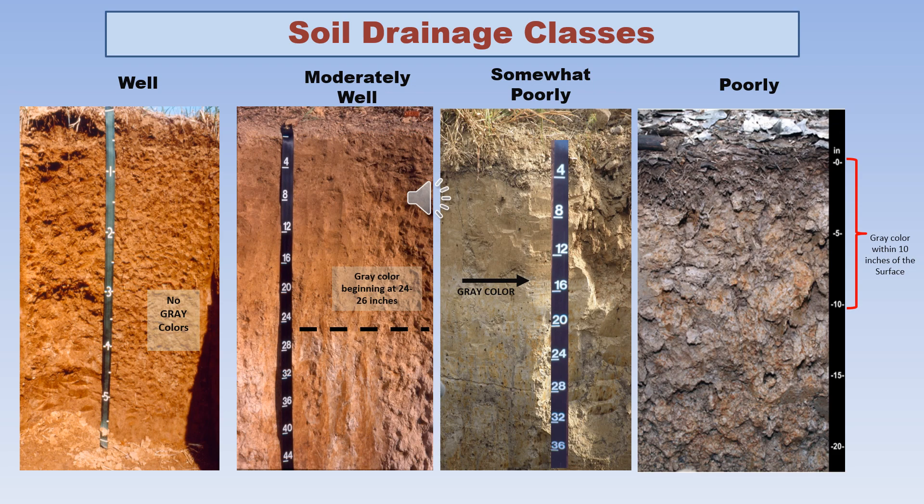One important note: gray colors that appear only within the topsoil layer, with no gray immediately below the topsoil, are characteristic of compaction and are not considered a drainage problem. Therefore, ignore any gray colors that appear solely within the topsoil layer.